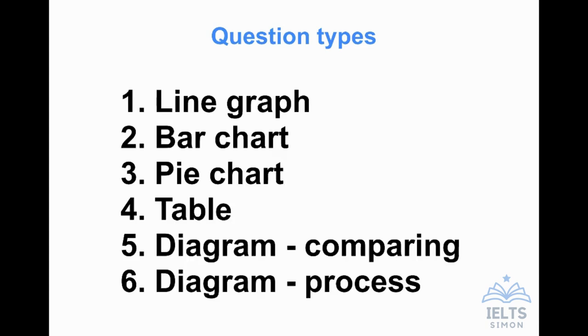Line graph, bar chart, pie chart, table, a diagram that's comparing things or a diagram that's showing a process. I consider a map to be a type of diagram. So maps are included in either number five or number six. Now I always ask my students, what do numbers one to four, line graph, bar chart, pie chart and table have in common? I've highlighted those four in green because they're very similar. The reason is, the answer is that they have one thing in common, which is that they all show numbers.